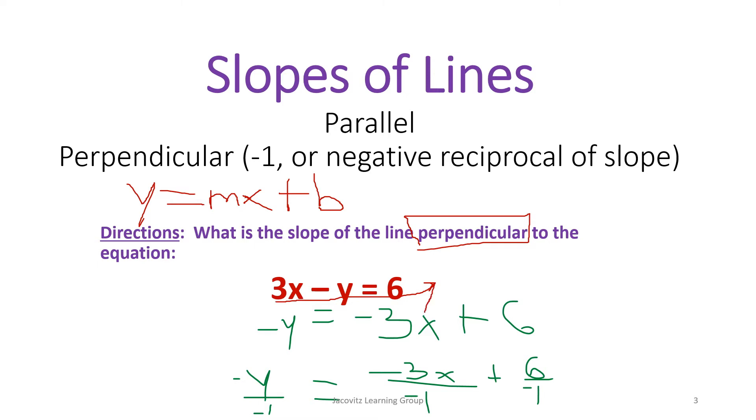The 6 was already here, so you just leave it. This then becomes negative y, but you try not to get a negative variable, so you take negative one over. If you do it on this side, you have to do it on the opposite side. That becomes positive 3x over negative 6.